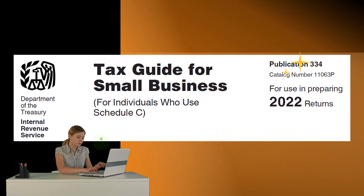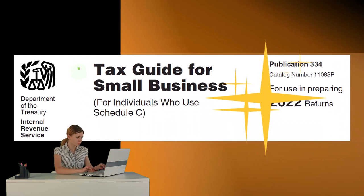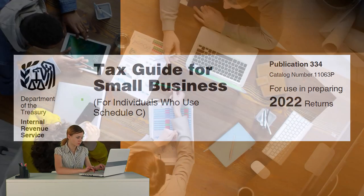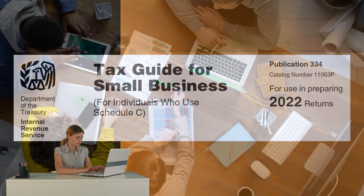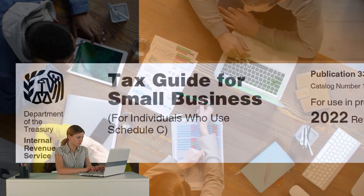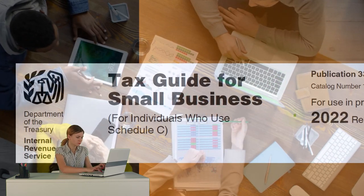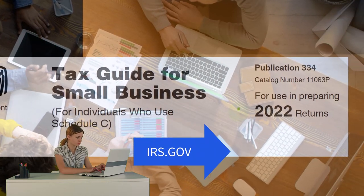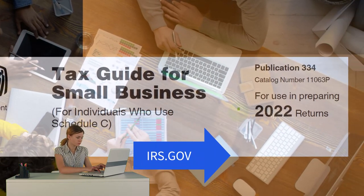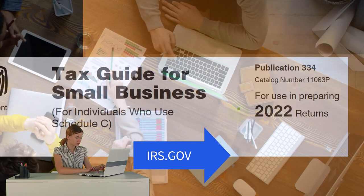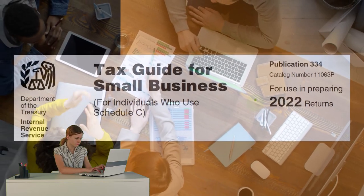Most of this information comes from the Tax Guide for Small Business for individuals who use Schedule C, Publication 334, tax year 2022. You can find it on the IRS website at irs.gov.